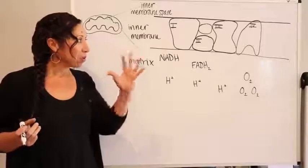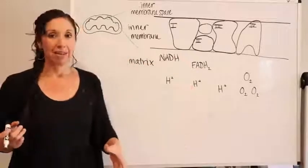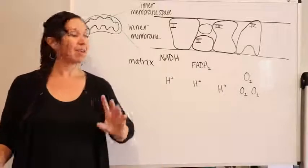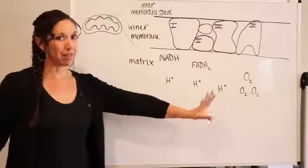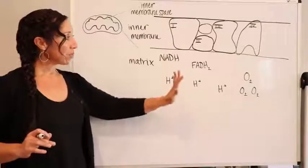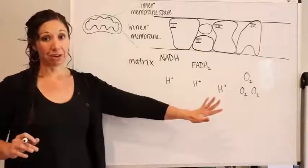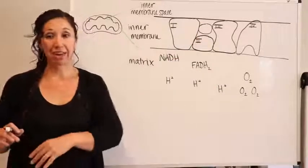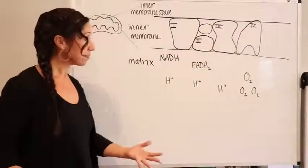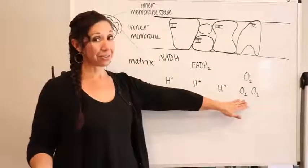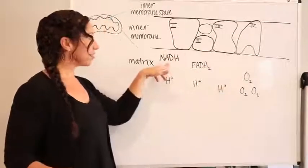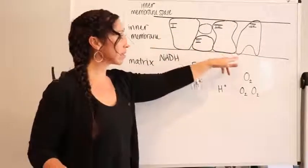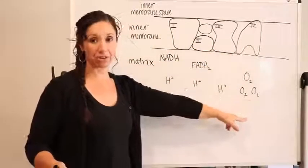If you remember back in chemistry, we talked about electronegativity — that is an atom's desire to pull electrons closer to itself. Remember how oxygen's electronegativity in water was so great that it would pull hydrogen's electrons closer to itself, giving it a partial negative charge? The whole goal of the electron transport chain is to make water. Oxygen has a high electronegativity, so as those electrons get dropped off at the slide, they get pulled to the bottom by oxygen's electronegativity.